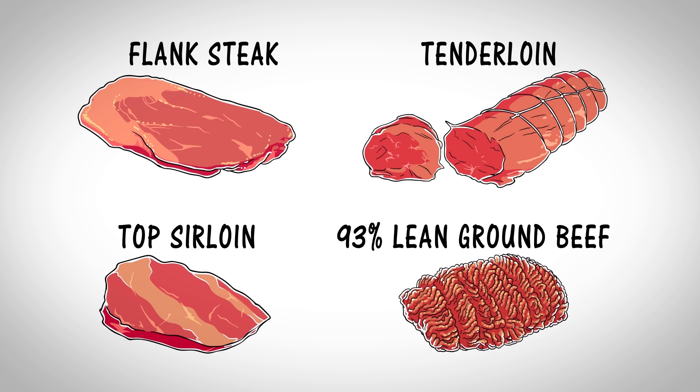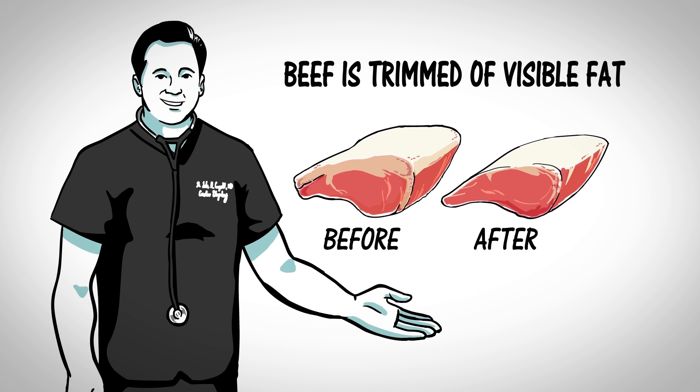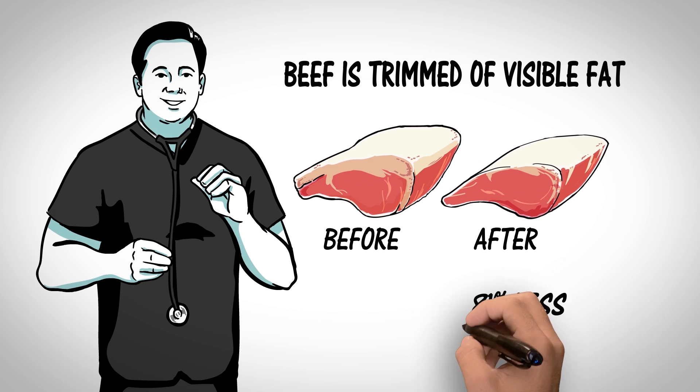Part of the reason beef is leaner today is that it is trimmed most of the visible fat. You might remember a long time ago, beef had a lot of fat on the outside that you could see in the grocery store. Today's beef does not look like that at all. In fact, there's 81% less external fat on the beef we buy in supermarkets today. That's a huge change.